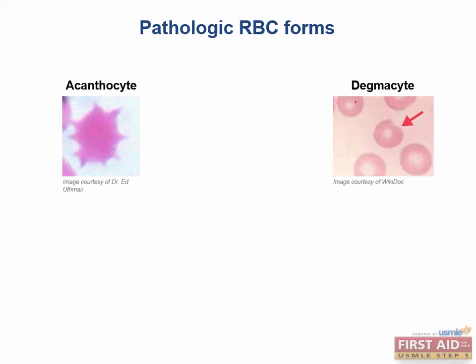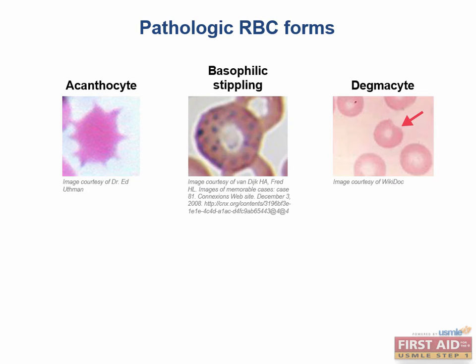These spiky cells are called acanthocytes, and can be found in liver disease and abetalipoproteinemia, aka cholesterol dysregulation. This is because of abnormal lipoproteins building in the cell wall, deforming the classic biconcave disc shape. Basophilic stippling is a pathologic RBC form, and is most commonly associated with lead poisoning.